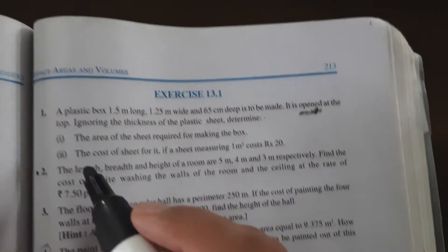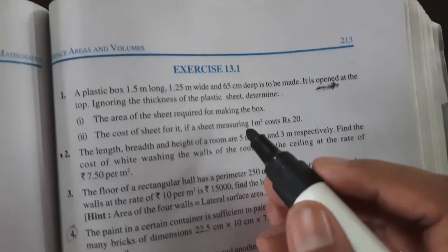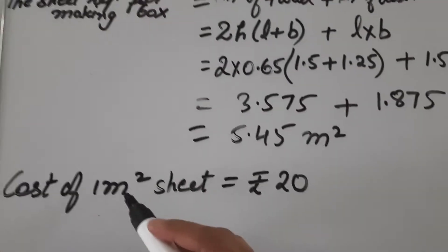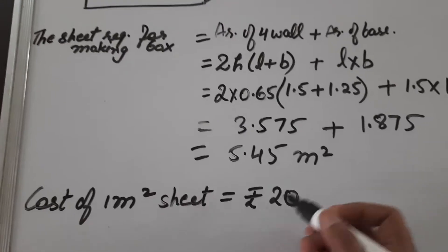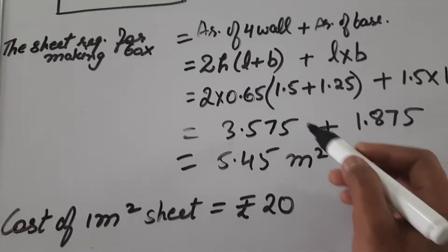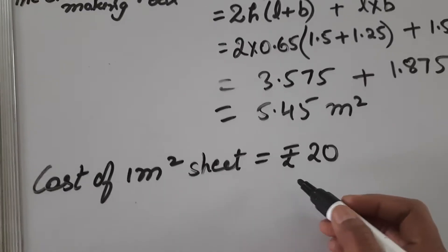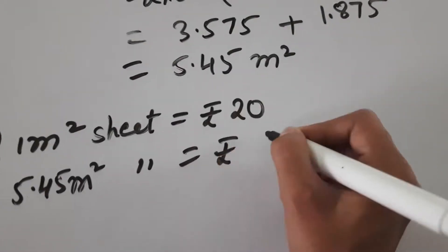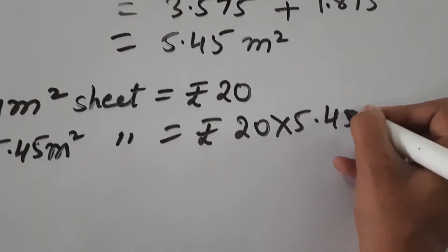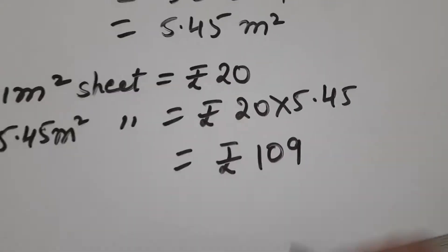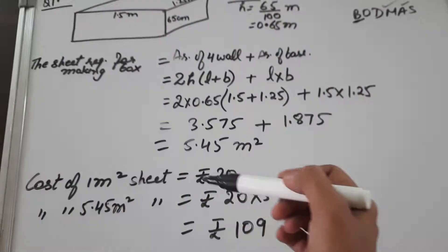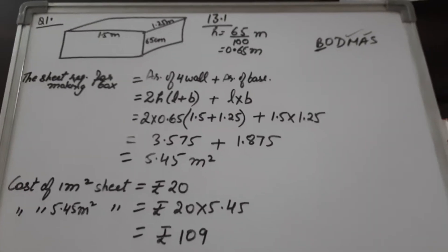Solving gives the area as 5.45 meter square — that much sheet is required to make the box. For the second part: if a sheet measuring 1 meter square costs rupees 20, the cost of 5.45 meter square sheet is 5.45 multiplied by 20, which gives rupees 109. So you need to spend rupees 109 to purchase the sheet for making this box.